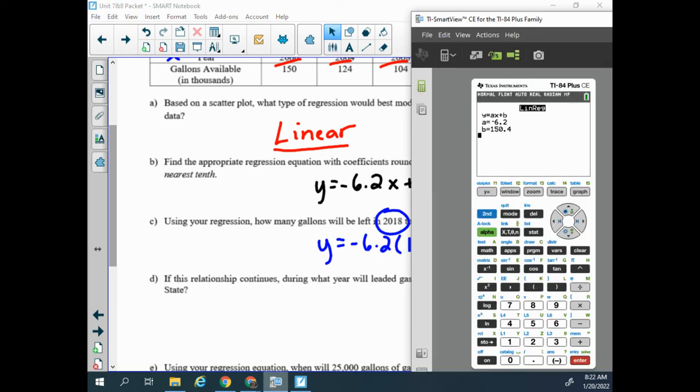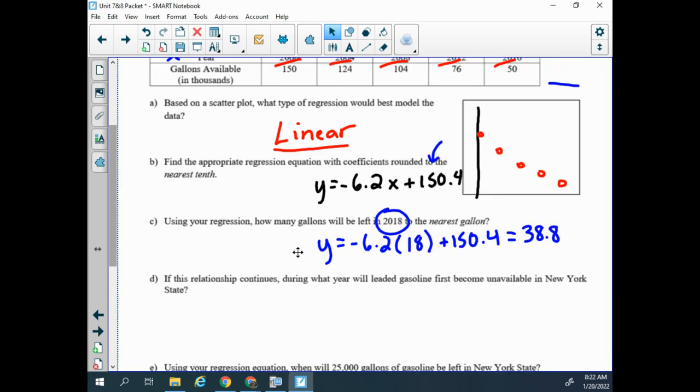Here we're going to round to the nearest gallon and actually I'm going to type that just so we can see, because we're going to talk about how this number is going to be translated over. So we have negative 6.2 times 18 plus 150.4. And also to see here when we round a regression like on part b we round it to the nearest tenth, that's what we use from that. Because they told me to round I don't go to those any full decimals if there are larger decimals. Now we also have to be careful because this doesn't mean in the entire state of New York there's 38.8 gallons available. This is measured in thousands so 38.8 means 38,800 gallons.